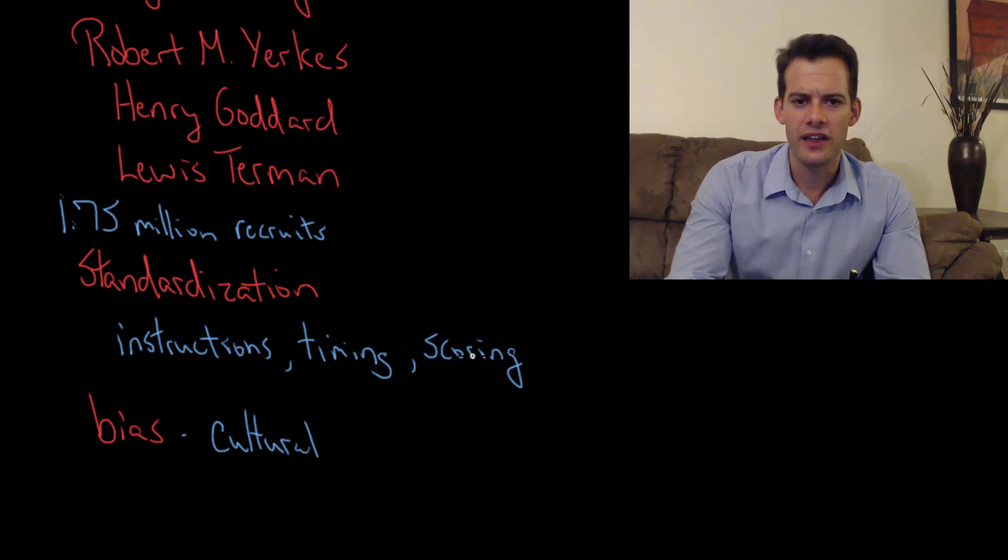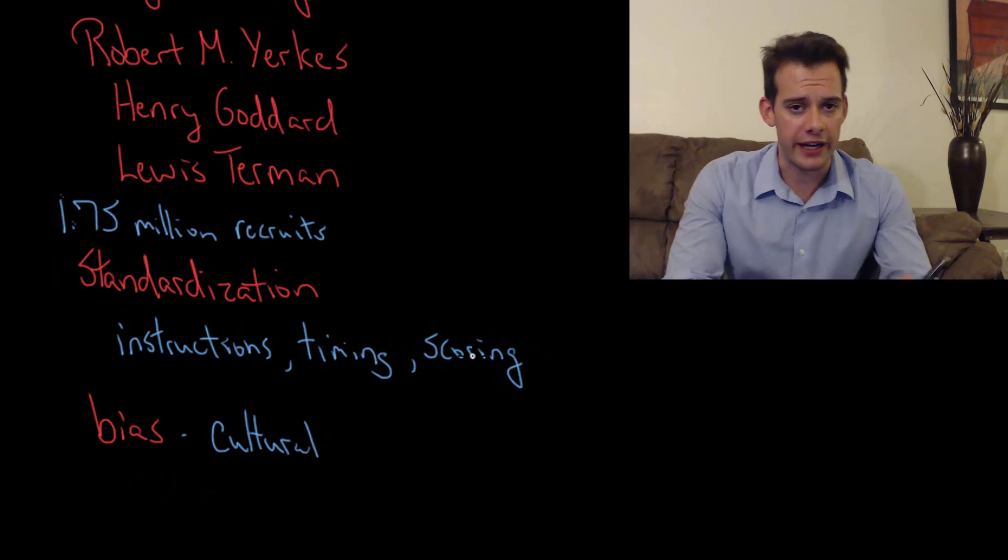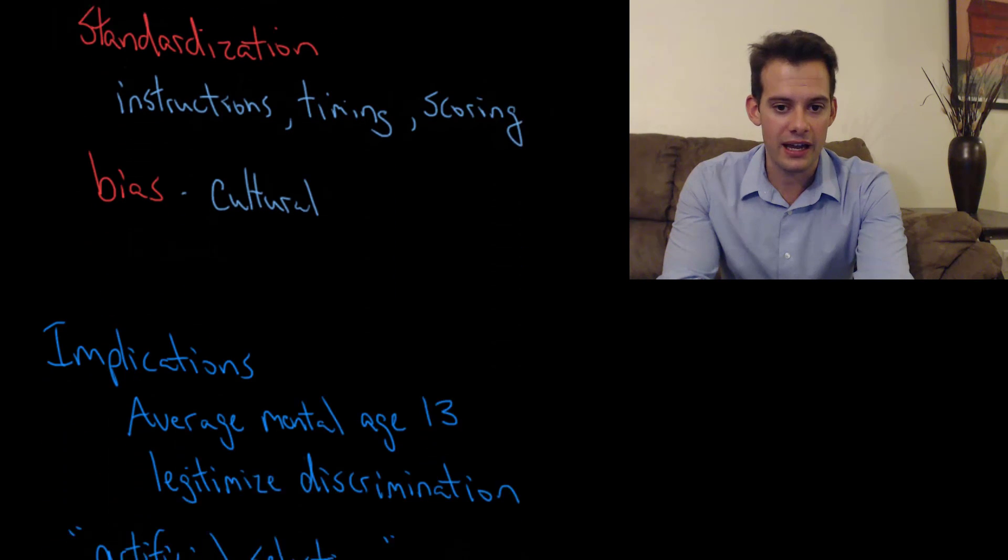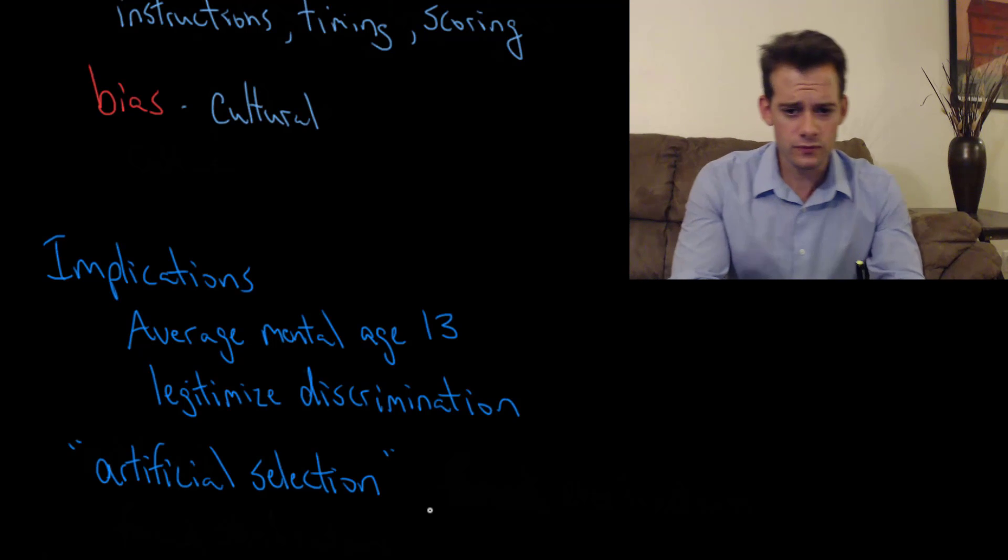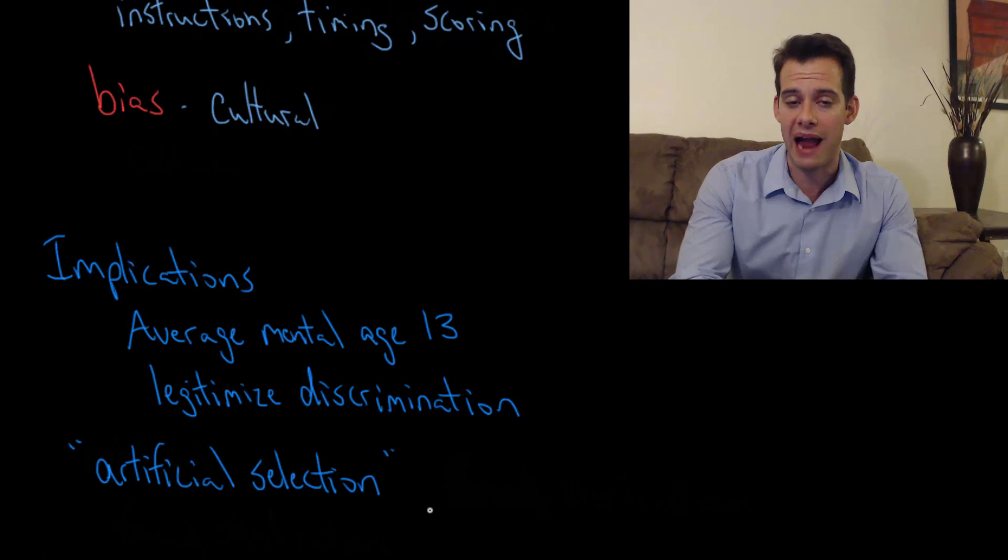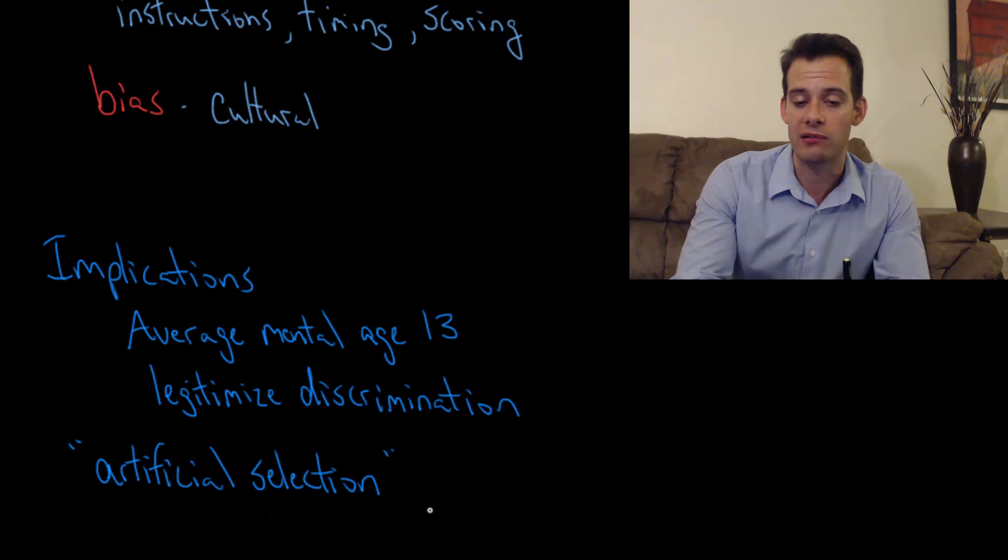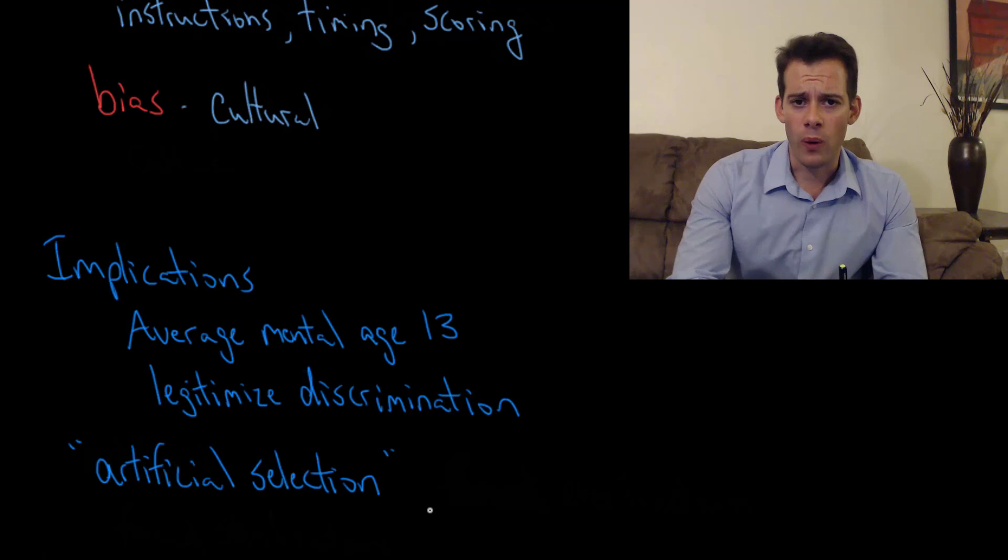When we look at these questions, the cultural bias seems obvious. Here it is 100 years after the test and now none of us are familiar with this There's a Reason ad. So we can't answer the question. And we recognize that it's probably inappropriate for an intelligence test. But the implications aren't so funny. Because when we look at how the results of this test were used, they were often used to legitimize discriminatory practices. The average mental age of an army recruit based on these tests was 13. This is why Gould titled his essay, A Nation of Morons.